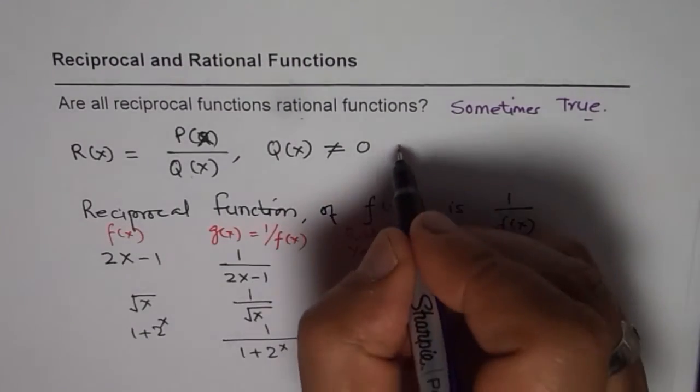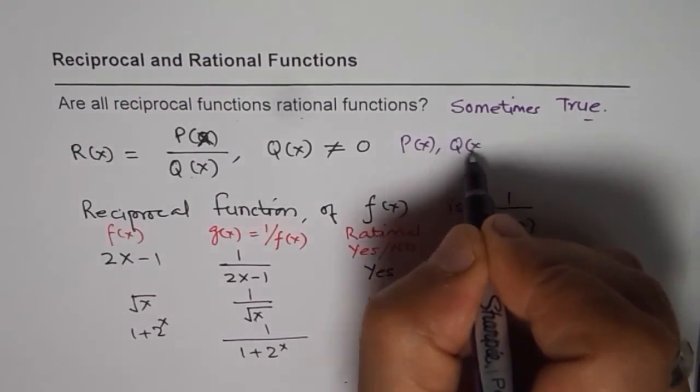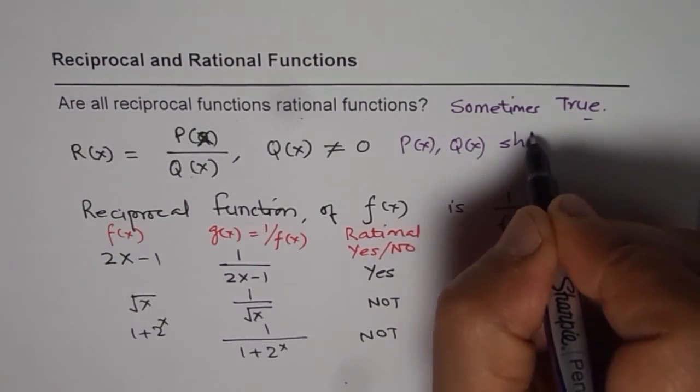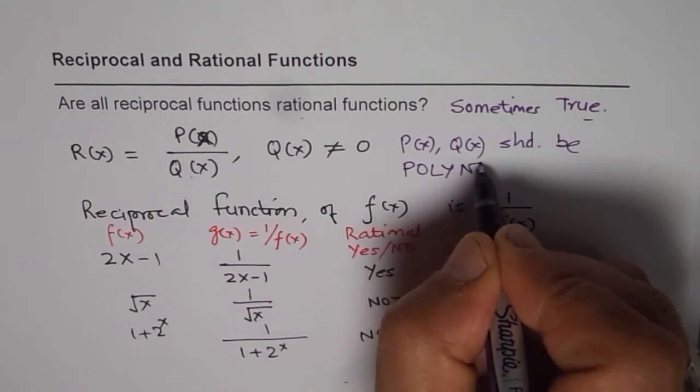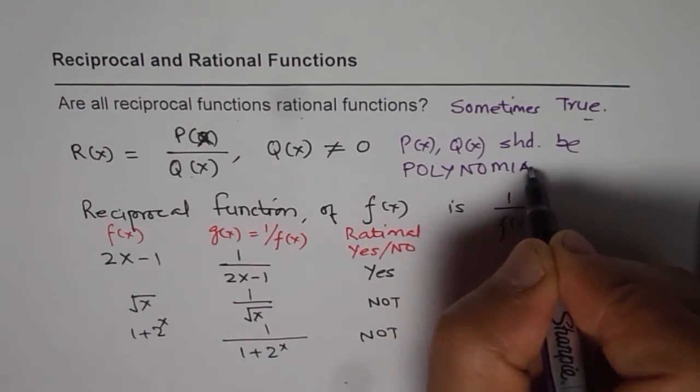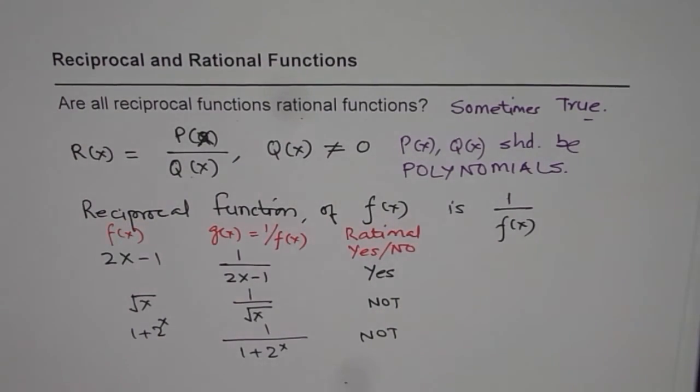We know in a rational function, both P of X and Q of X should be polynomials. Understand that part.